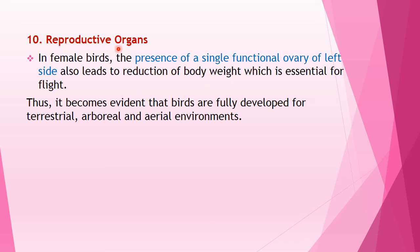The tenth anatomical adaptation is related to the reproductive system. In female birds, the presence of a single functional ovary on the left side leads to reduction of body weight, which is essential for flight. Thus it becomes evident that birds are fully adapted for terrestrial, arboreal, and aerial environments.